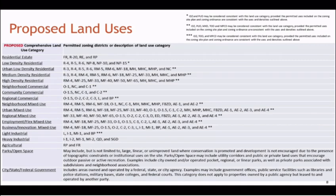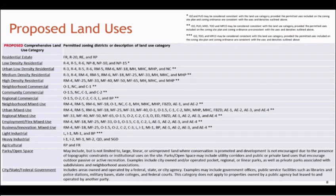While developing this proposal, the department conducted research into the most populous cities in the country with similar comprehensive plan policies related to growth allocation, leveraging transit investments, and other inputs — essentially a review of national best practices. The proposal before council today is on the lower end of the density spectrum when compared to other comparable cities. Staff believes these modest updates to the code will allow fulfillment of SA Tomorrow recommendations and that incremental changes will address future land use needs while keeping the city economically competitive.